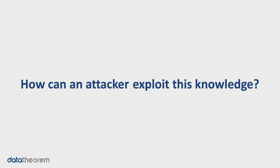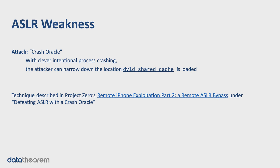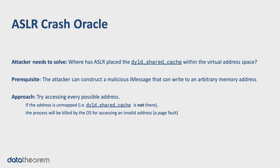So the question is: knowing we have to defeat ASLR and knowing the DYLD Shared Cache sits at a constant location, how can we put these things together to carry out the attack chain? Google Project Zero developed a really clever technique called a crash oracle. The high-level idea is that by intentionally crashing the recipient's iMessage process over and over again, the attacker can effectively use an information side-channel attack to leak where the shared cache has been placed. The attacker has the ability to construct a malicious iMessage that, when received, writes to any arbitrary memory address they choose.